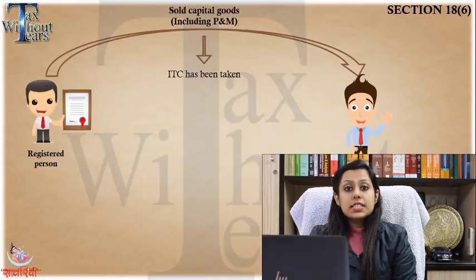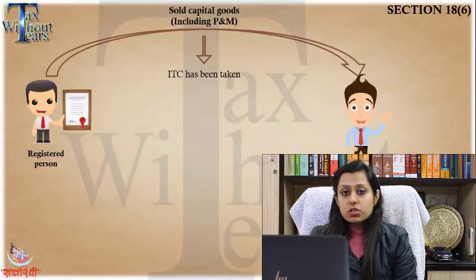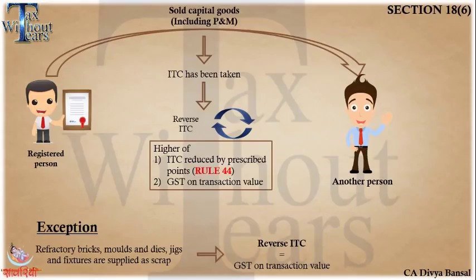If a registered person sells capital goods including plant and machinery to another person, he must pay or reverse the ITC. The amount of ITC to be reversed is the higher of: first, the ITC reduced by the prescribed percentage as per Rule 44, or second, the GST on the transaction value. Whichever is higher needs to be reversed. However, in the case of refractory molds, bricks, jigs, dies, fixtures etc., the ITC that needs to be reversed is equivalent to GST on the transaction value itself.